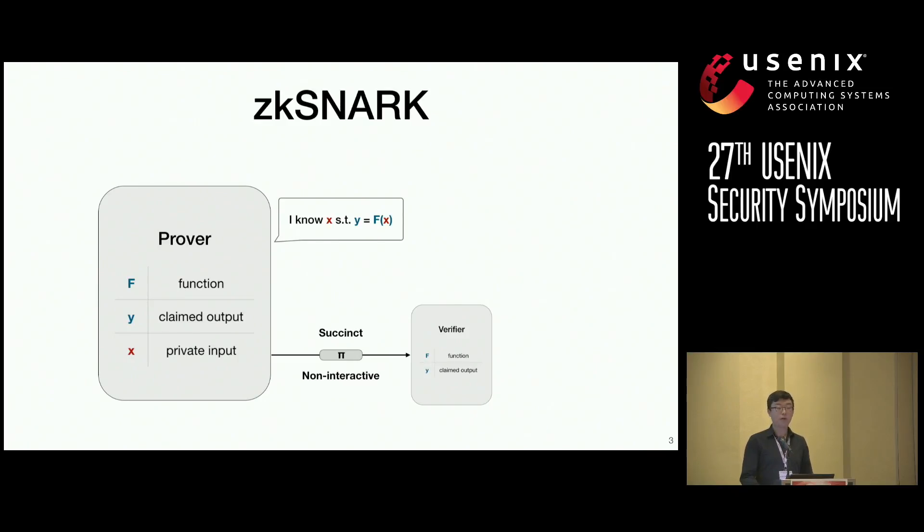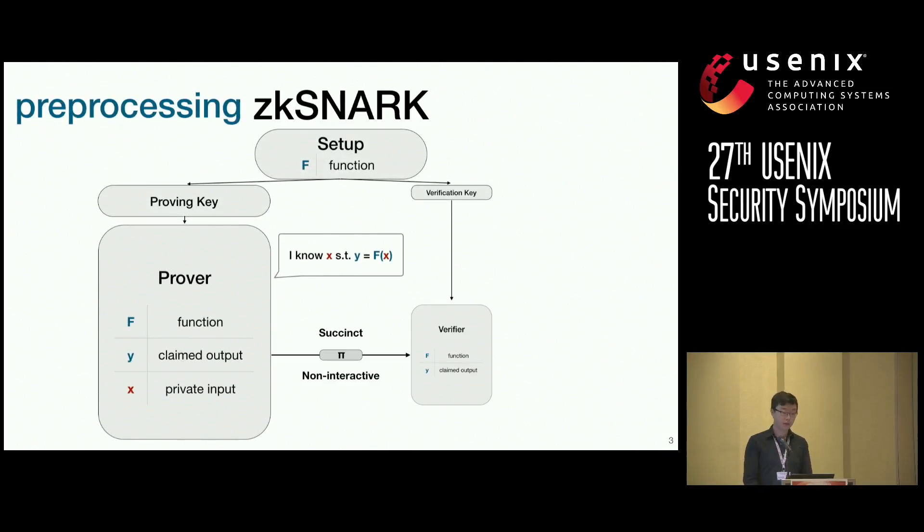One particular type of ZK-SNARK that we're going to look at today is a preprocessing ZK-SNARK. And this is one where you have a setup that takes as input a public function f and produces two outputs, a proving key and a verification key. Note that the proving key here is significantly larger than the verification key. And overall, ZK-SNARKs have many interesting applications, two of which we'll discuss today.